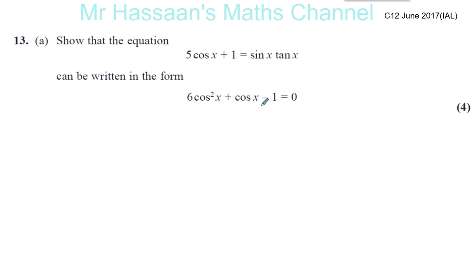So we can think about what to do here to change it. We know a few identities. One of the identities we know is that tan x equals sine x over cosine x.